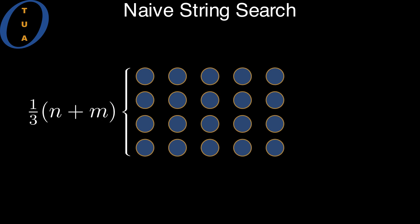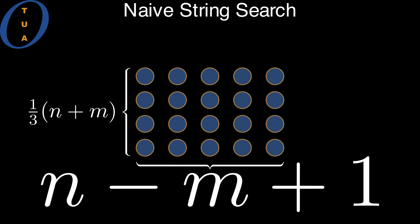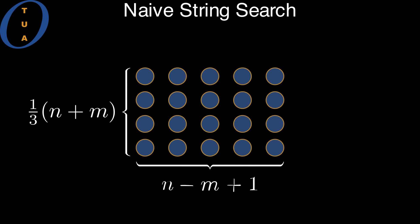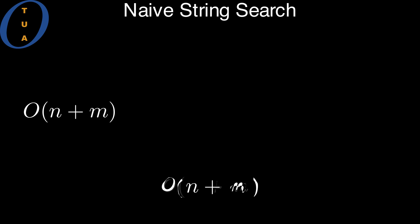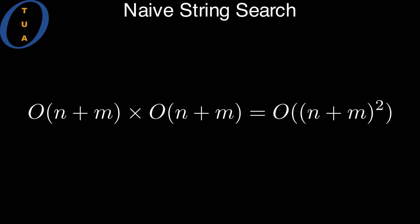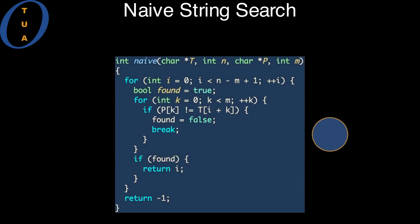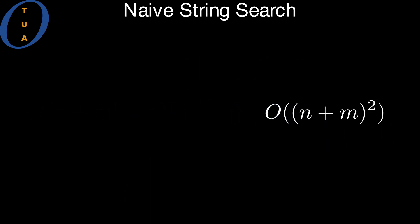We now count the number of tokens vertically. There are m lines, and m is roughly one-third of the size of the input. Horizontally, there are n minus m plus one columns, which is again roughly one-third of the size of the input. Therefore, there are big O of n plus m squared tokens overall. As each token represents one comparison and takes constant time, the naive algorithm is quadratic in the worst case.